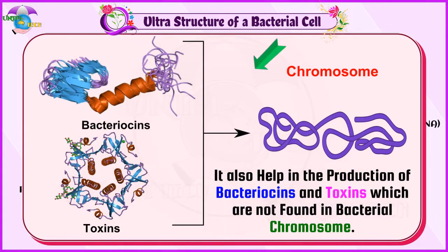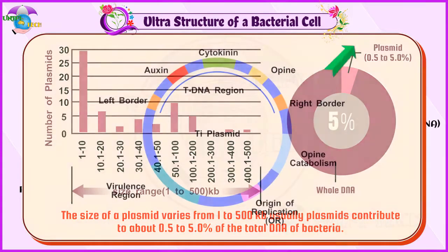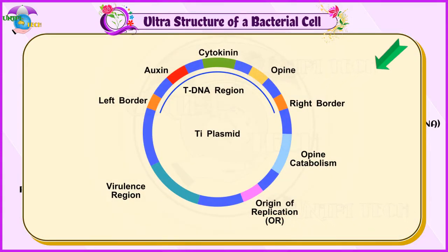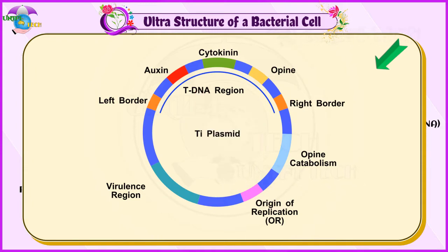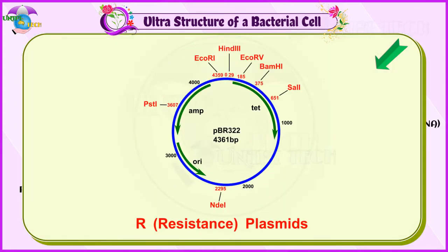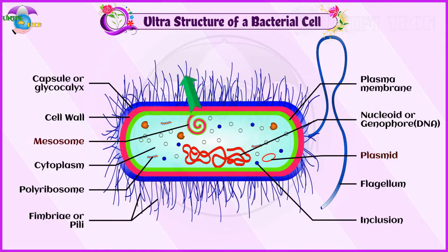Plasmids also help in the production of bacteriocins and toxins which are not found in bacterial chromosomes. The size of a plasmid varies from 1 to 500 kb. Usually plasmids contribute about 0.5 to 5% of the total DNA of bacteria. The number of plasmids per cell varies. Plasmids are classified into different types based on function: F-factor, R-plasmids, col-plasmids, RI-plasmids, and TI-plasmids.